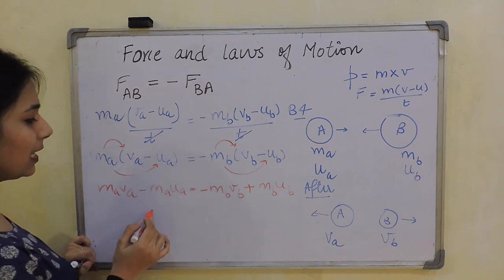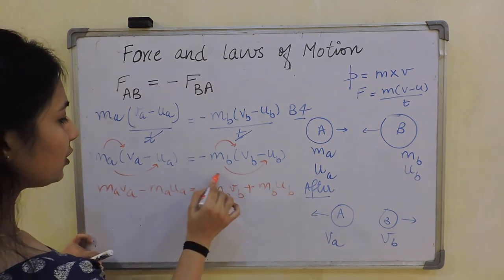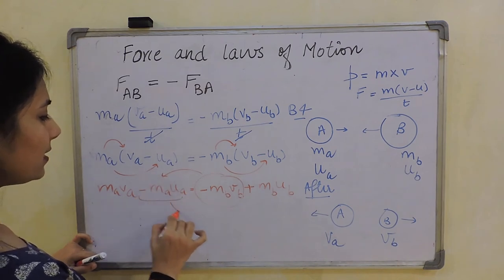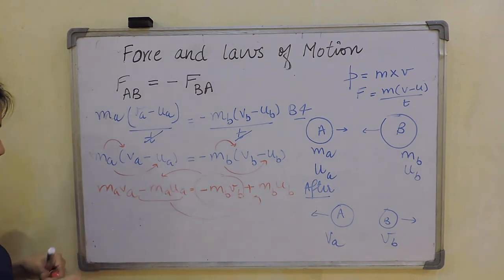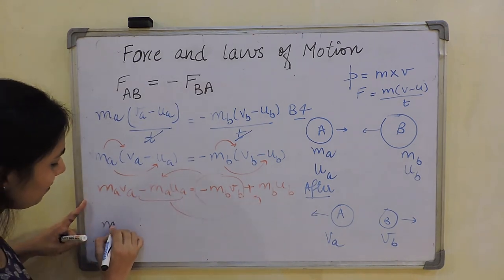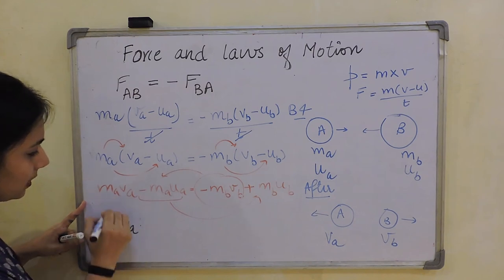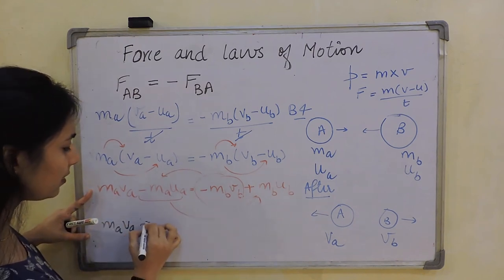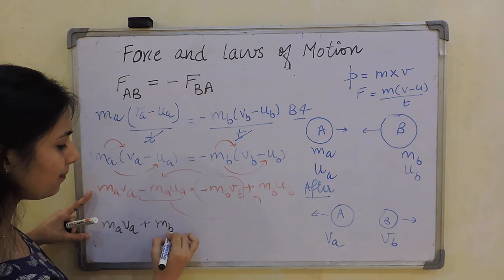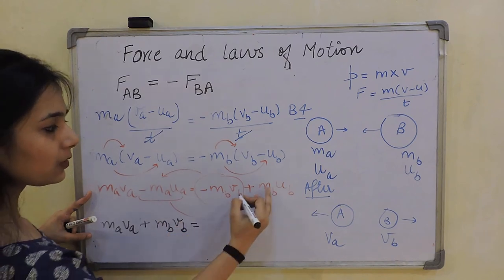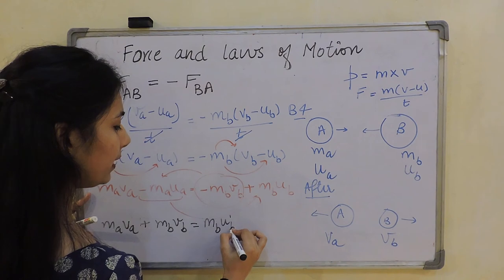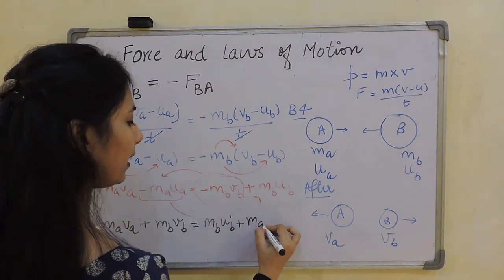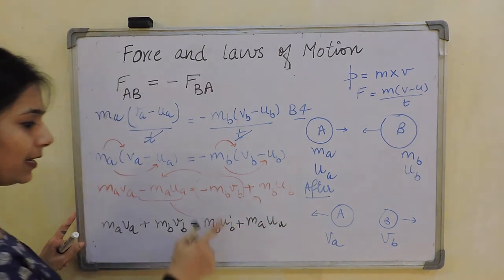Now these are negative terms. Let's rearrange them. I'll shift this minus term here and this minus term here. What happens when I do the shifting? I will have mₐvₐ plus m_bv_b equals m_bu_b plus mₐuₐ.